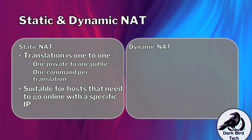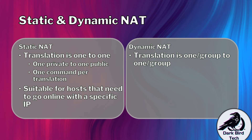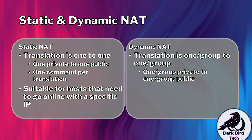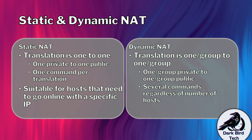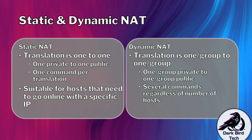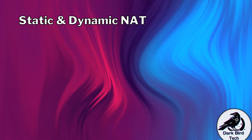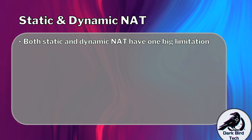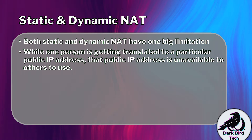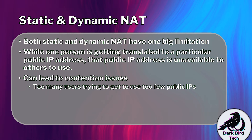With dynamic NAT, the translation allows us to go with one or a group to one or a group — it's going to be one or a group of private people to one or a group of public addresses. It's going to be several commands to do this all, but whether I'm translating for 10 people, 100 or 1,000, it's going to be the same amount of commands more or less. This makes it suitable for doing whole LAN segments. But both static and dynamic are not perfect — they have one big limitation: while one person is getting translated to a particular public IP address, that public IP address is unavailable for others to use, which can lead to contention issues where we might have too many users trying to use too few public IP addresses.